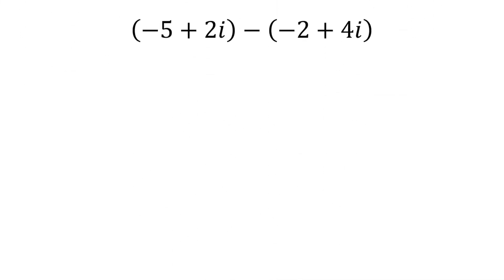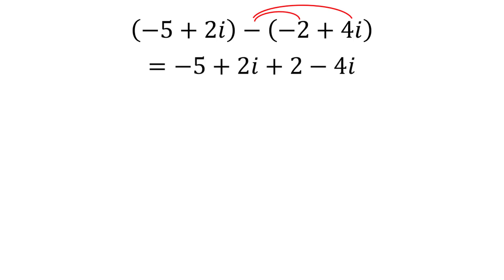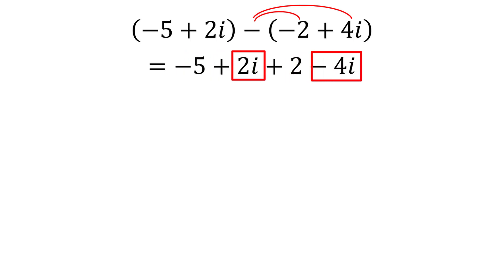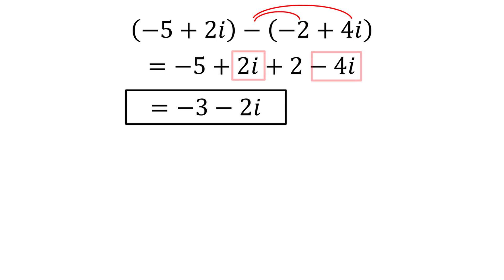We can add or subtract complex numbers as if i was a variable. For example, consider negative 5 plus 2i minus the quantity negative 2 plus 4i. We can distribute the negative sign so that we have negative 5 plus 2i plus 2 minus 4i. We can then combine the negative 5 and 2 to get negative 3, and combine the 2i and negative 4i to get negative 2i. Our answer is negative 3 minus 2i.